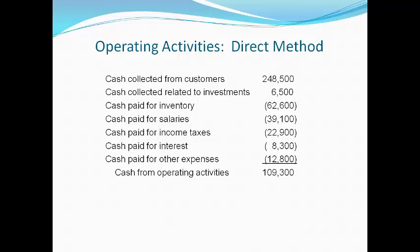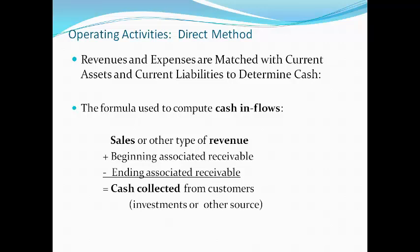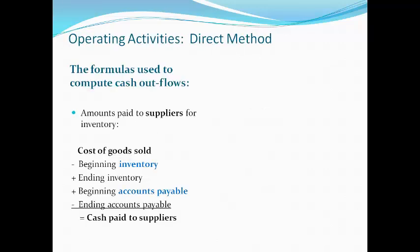The total amount of cash from operating activities will be the same under the indirect or the direct method. The direct method matches revenues and expenses reported when earned and incurred with the associated current asset and current liability to determine the cash that resulted during the period. Cash inflows match a revenue with a receivable. An increase in the receivable means less cash was received than revenue; a decrease means more cash was received than current period sales. The amount paid to suppliers for inventory is computed using the change in inventory and the change in accounts payable. The change in inventory gives the amount purchased during the period, and the change in accounts payable determines if that inventory was paid for in a different period.